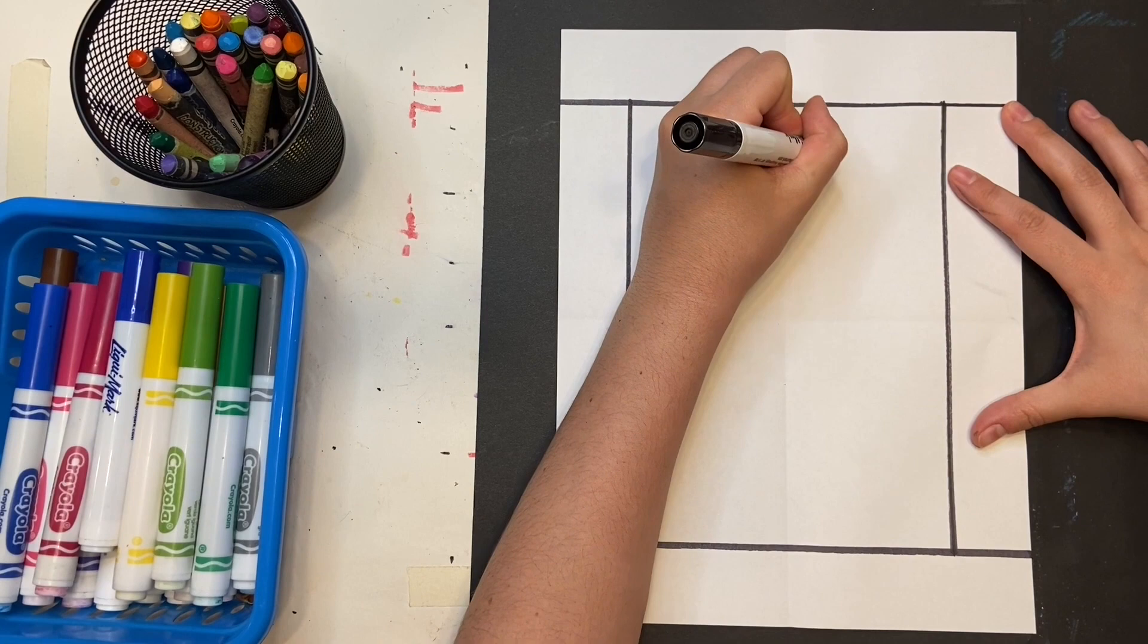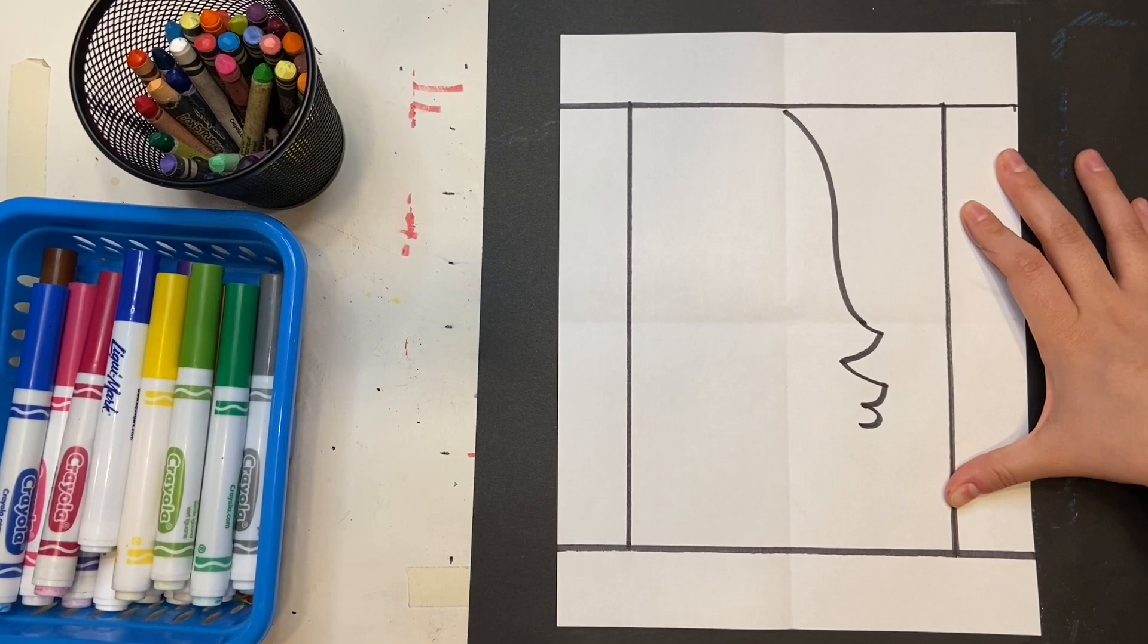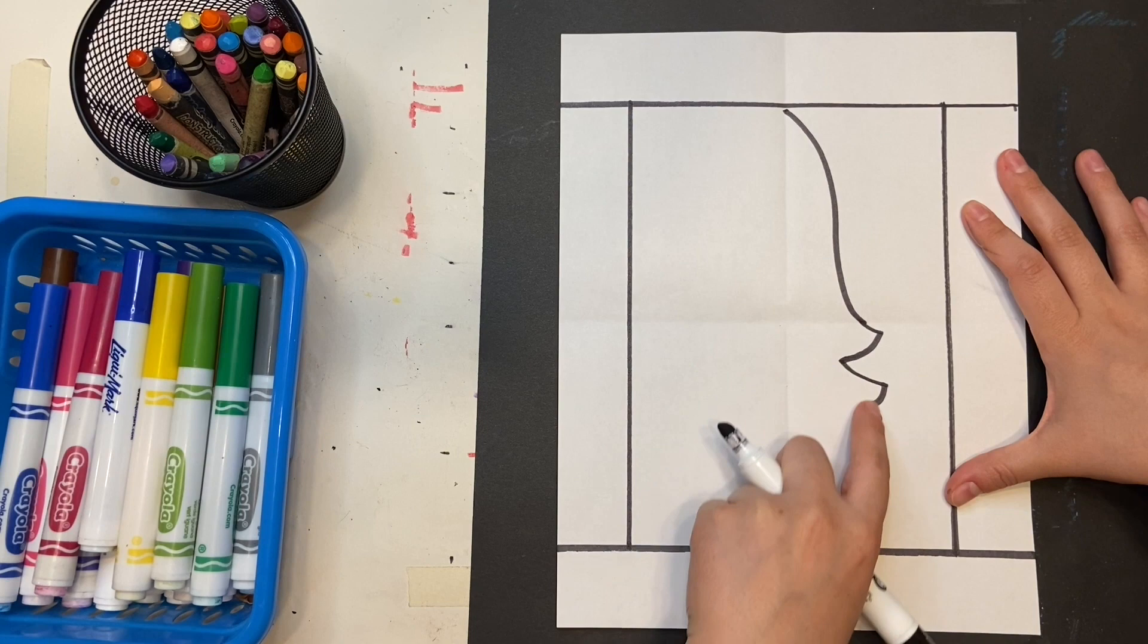I'm starting at the top, right where the fold is. I'm going to the second fold, down a little bit for the nose with a curve, and then I'll quickly sketch the lips, followed by the chin and the neck.